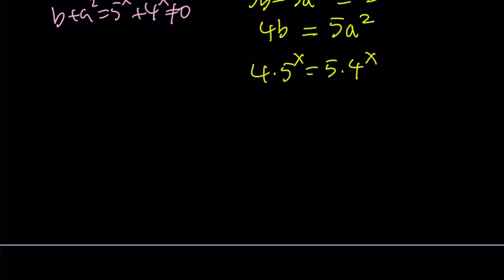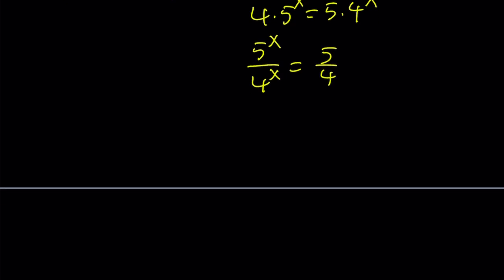But let's make it more formal and rigorous. I know some people like the rigor. So let's divide both sides by 4 to the x and bring the 4 over here. And now we can write this as 5 over 4 to the power x equals 5 over 4. And this implies that x equals 1.